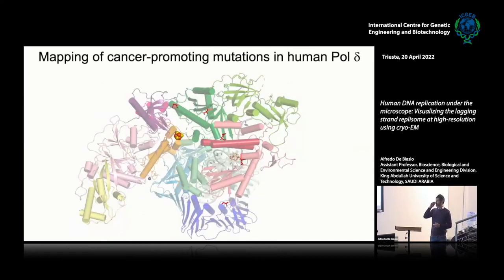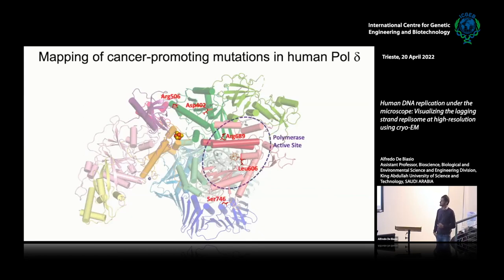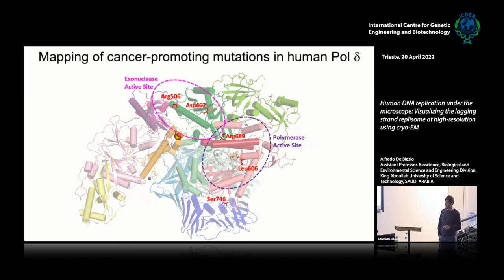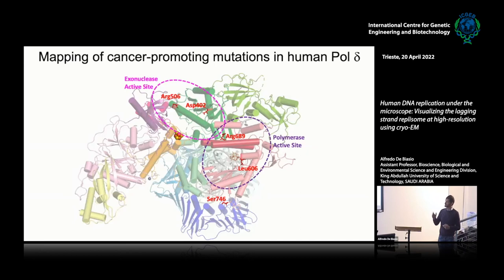Our CryoEM structure also allowed us to map many cancer-promoting mutations in human polymerase delta. We found that most mutations are located either in the polymerase active site or in the exonuclease active site, suggesting these mutations may affect both the rate of DNA synthesis and the polymerase's ability to correct replication mistakes.